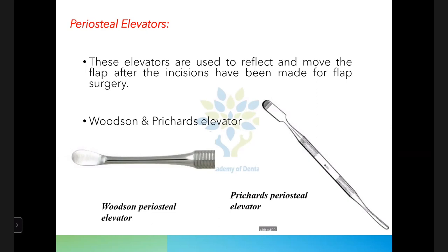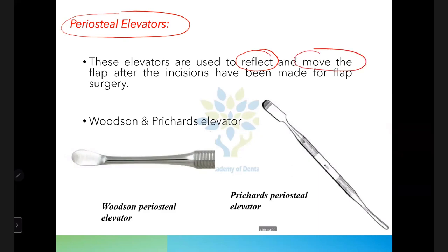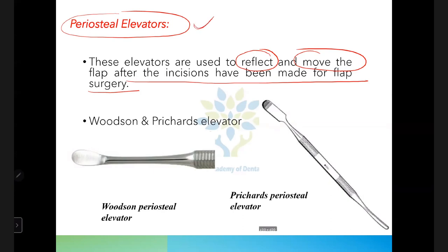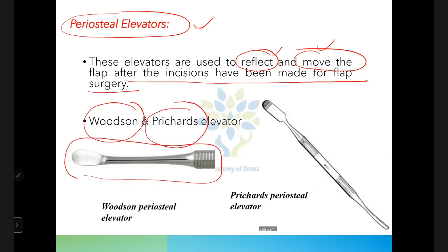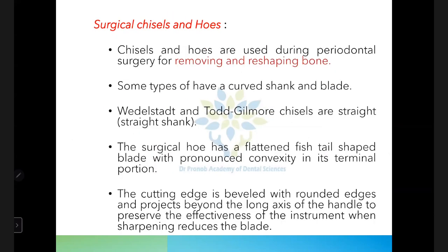Next are periosteal elevators, used to reflect and move the flap after incisions. The two types are Woodson's elevator and Pritchard's elevator. Pritchard's elevator has a broader end compared to Woodson's periosteal elevator. These are similar to those used in tooth extractions.